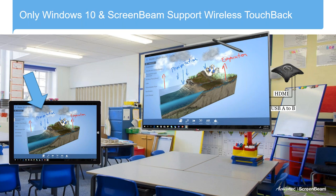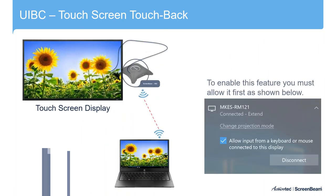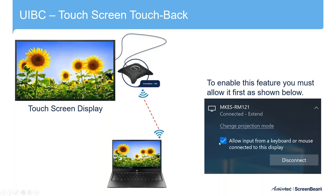That's the ability to interact with a student's computer from the front of the room. In Windows 10, there's a checkbox that says 'allow input from a keyboard or mouse' — that's how you get touchback to work if you're using a touch screen and USB cord in your classroom. Moving on to the third layer, which is something we've been working on recently as a company.